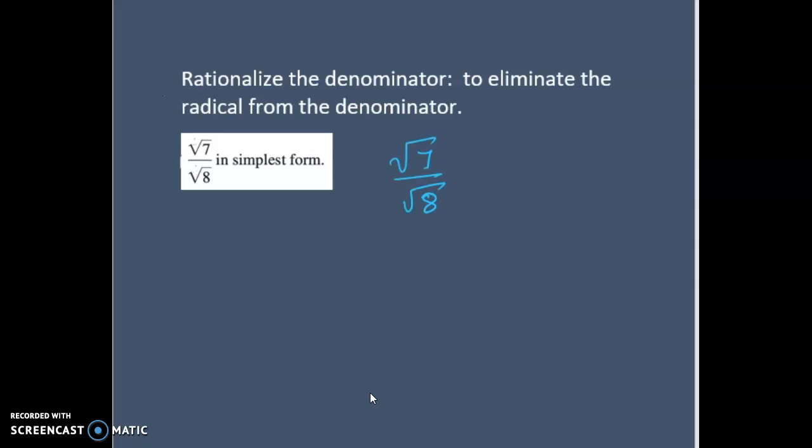We have radical 7 over radical 8. Now again, there is no index given to you, that means it is a square root. 7 is already prime, I cannot simplify it. But let's try to simplify 8. Can I write radical of 8 as 2 times 2 times 2? Because 2 times 2 is 4, 4 times 2 is 8. So it's a square root, I need twinsies. And this can come out. So this is nothing but 2 radical 2.